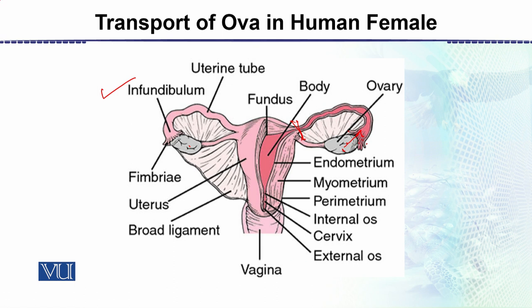This part is the cervix, and then to the external opening it moves outside. This is the simple route of the ovum right from the ovary to the exterior. There are also many other labels here, including the endometrium, which is the innermost lining.